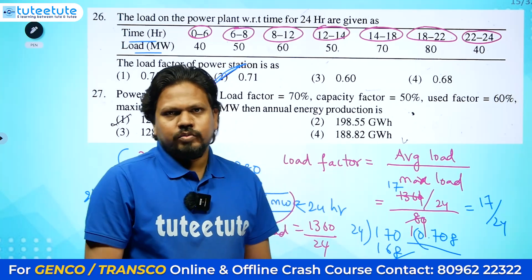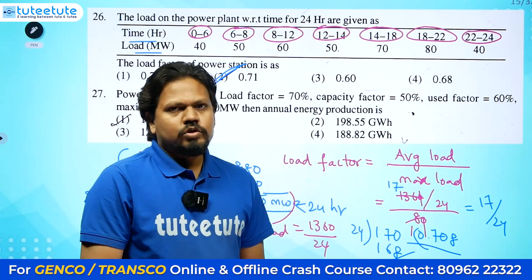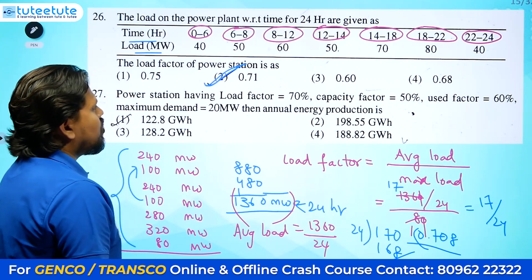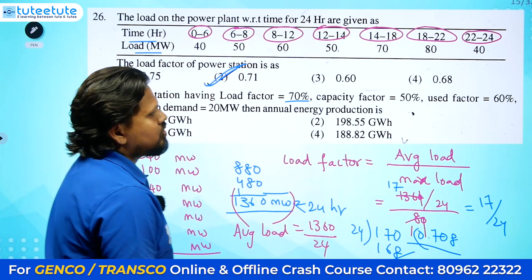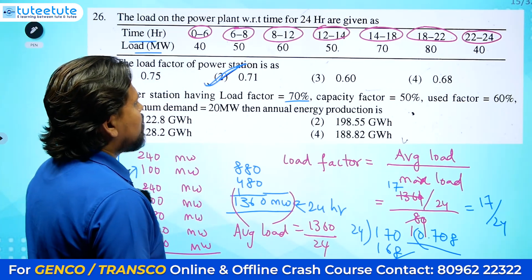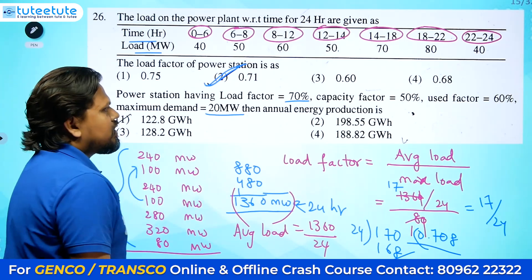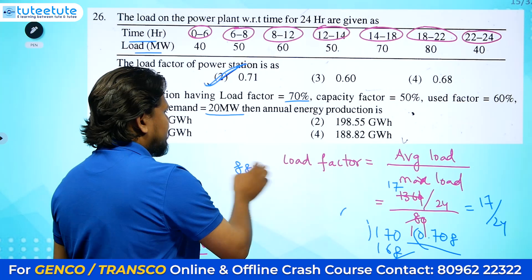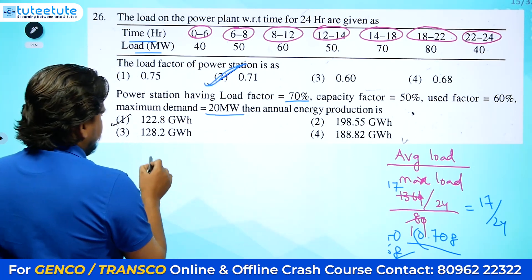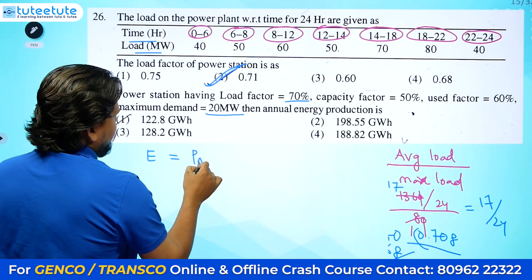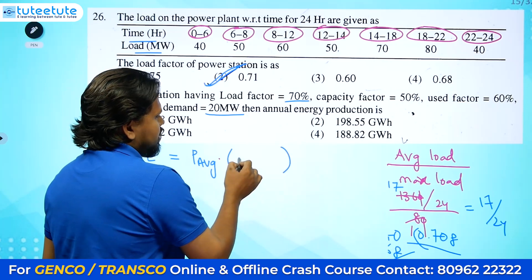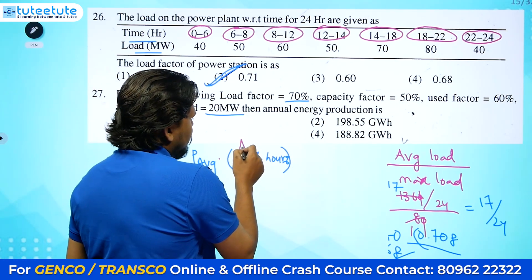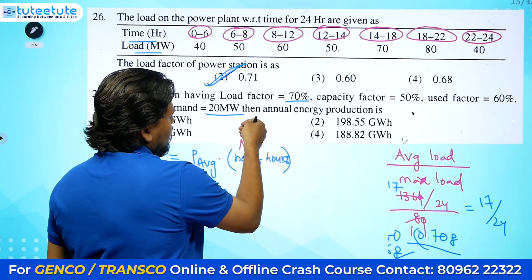In different questions, different calculations will also be explained since we are covering 500 questions. Next question: a power station has load factor = 70%, capacity factor = 50%, utilization factor = 60%, and maximum demand = 20 MW. Find the annual energy production. Annual means for the entire year — how much energy is produced.